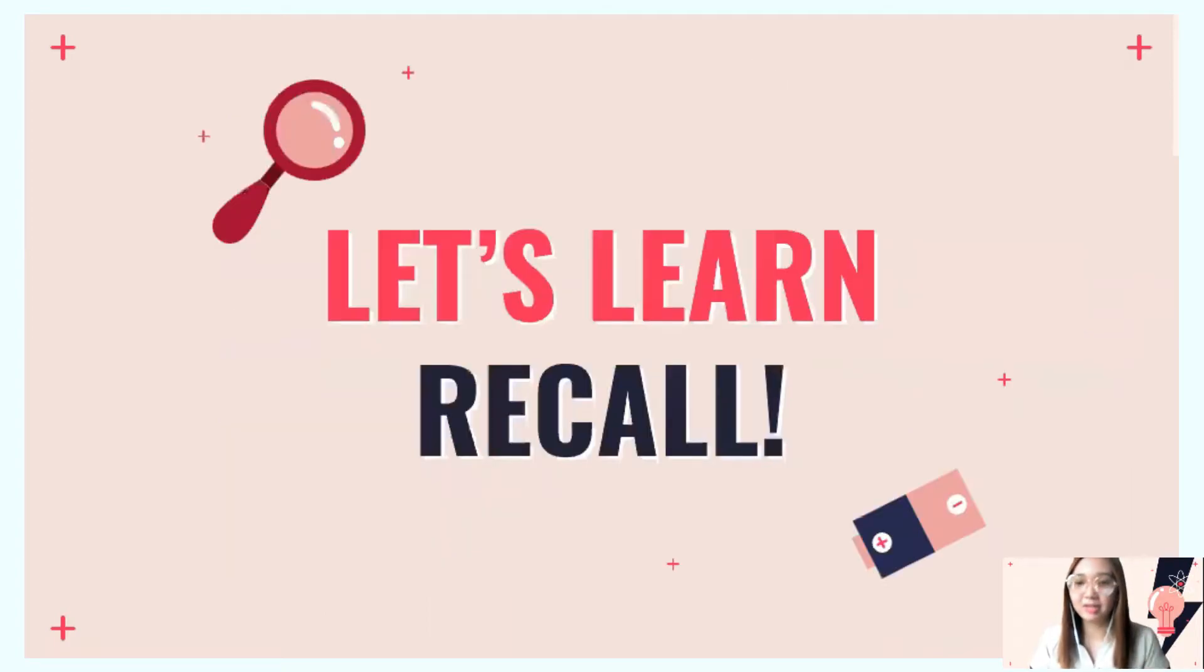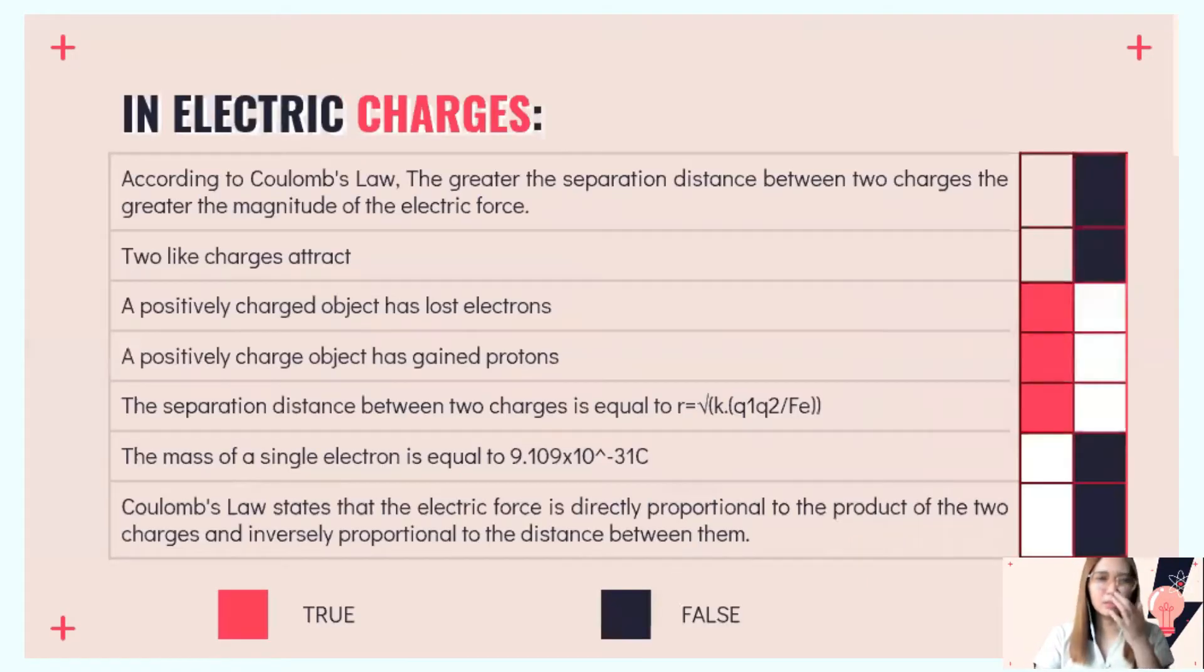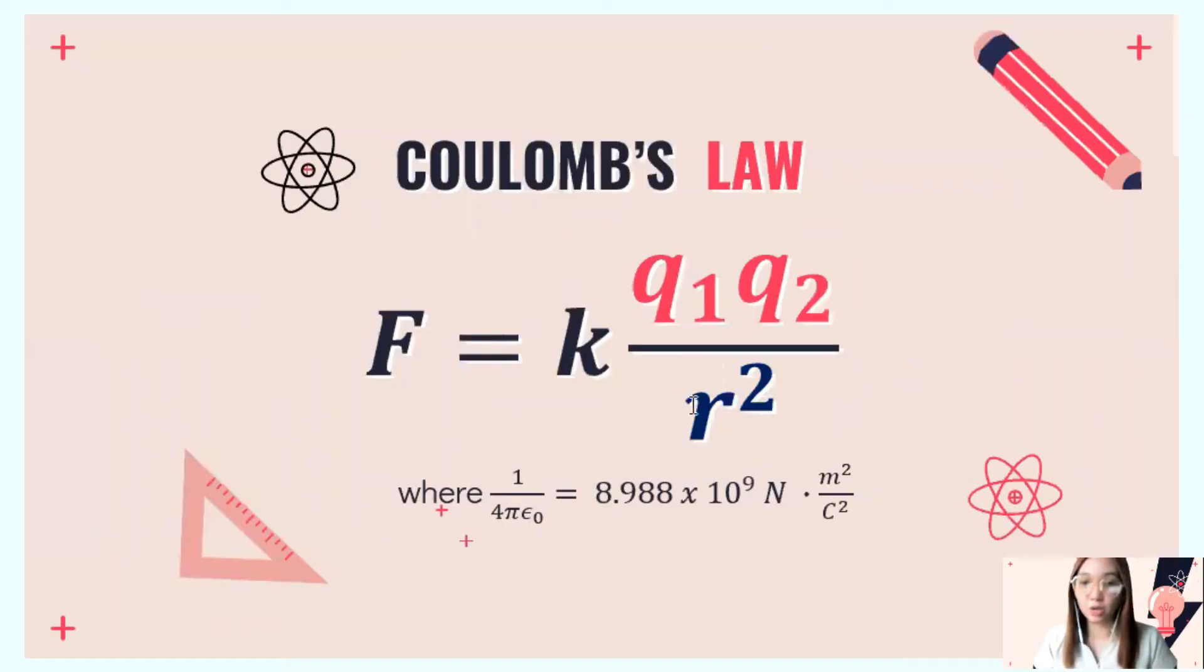Let's recall what we discussed in our previous lecture. We discussed Coulomb's Law. The Coulomb's Law equation we use is F equals k times q1 q2 over r squared. K equals the Coulomb's constant or proportionality constant, which is 8.988 times 10 to the 9 newton meters squared over coulomb squared. But we'll just use 9 times 10 to the 9 newton meters squared over coulomb squared.